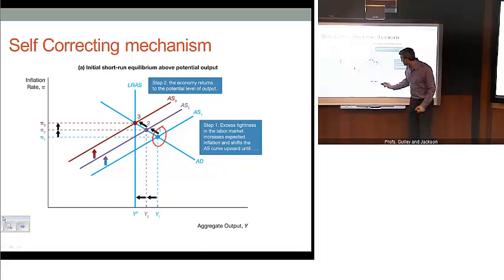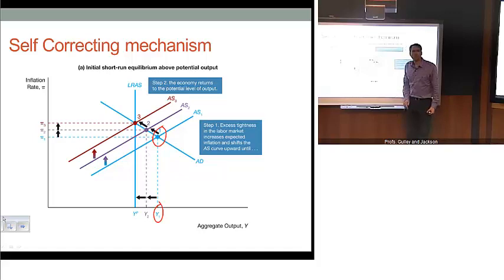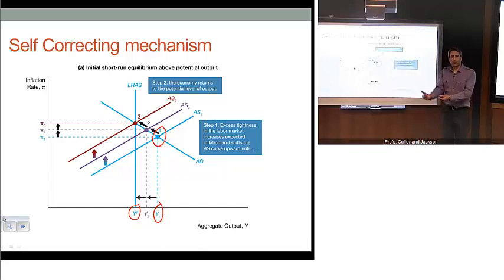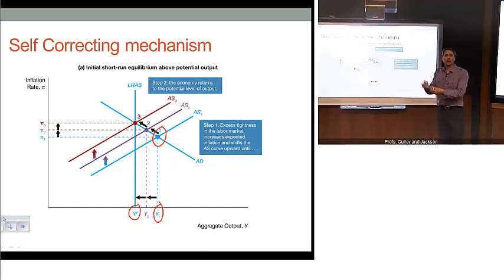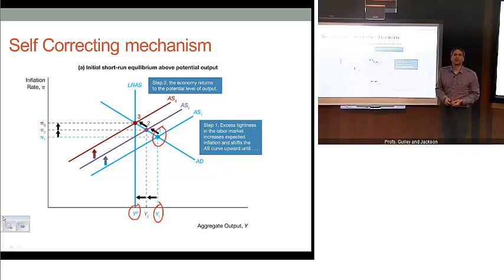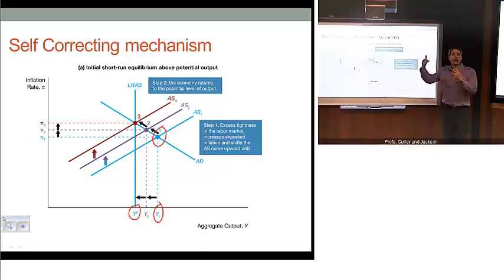The story is pretty simple. At our equilibrium point one in the short run, output is at Y1, which is above our potential level of output. If we're producing beyond the potential level of output, that's not sustainable in the long run. We're going to be paying our workers overtime, draining our labor resources, and running our machines at full capacity, which is going to wear out and add to costs. So eventually those higher costs are going to bleed through to higher inflation, and hence higher expected inflation is going to occur as a result.